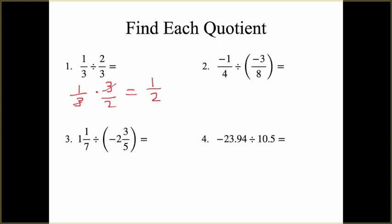For number 2, negative 1 fourth divided by negative 3 eighths is the same as negative 1 fourth times negative 8 thirds. Multiplying across gives us 8 over 12. Negative times negative is positive, and we simplify 8 over 12 to get 2 thirds. You could also cancel between the negative 8 and the 4 beforehand — you'll get the same answer of 2 thirds.